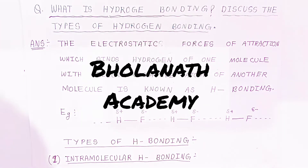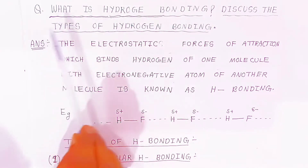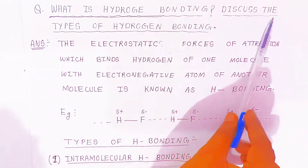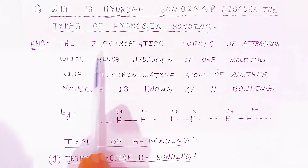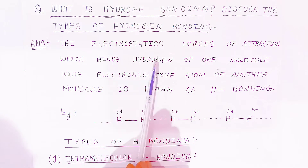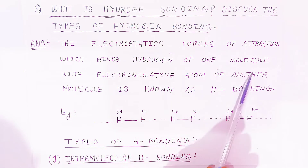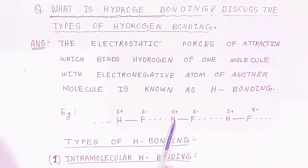Welcome to Bholanath Academy. In this video we are going to see what is hydrogen bonding and discuss the types of hydrogen bonding. Hydrogen bonding is the electrostatic force of attraction which binds the hydrogen of one molecule with the electronegative atom of another molecule. Here, this is the electronegative atom and this is the hydrogen atom — these two belong to two different molecules.